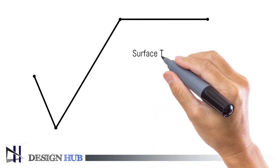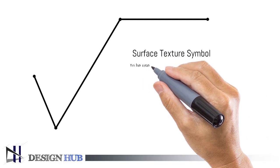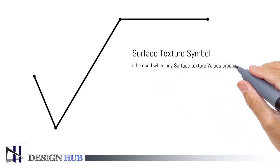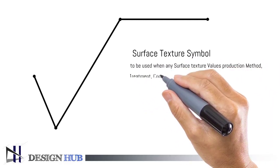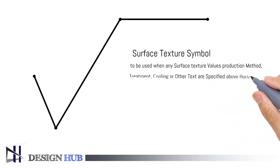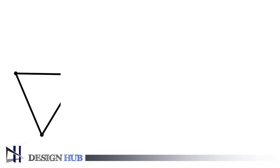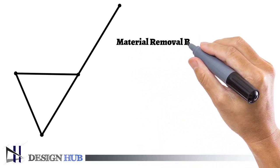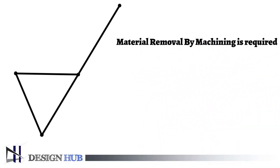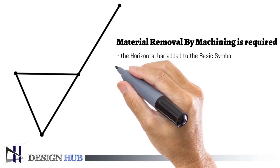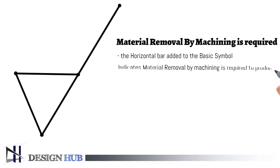Surface texture symbol with a horizontal bar. This symbol is used when any surface values, production method, treatment, cooling, or other text is specified above the horizontal line or to the right of the symbol. Material removal by machining is required. In this symbol, a horizontal bar is added to the basic symbol. The horizontal bar indicates that material removal by machining is required to produce the surface as per requirement.